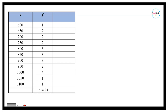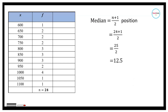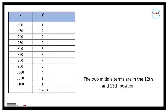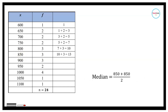Using the position formula: (24 + 1) / 2 = 12.5, so the two middle terms are at the 12th and 13th positions. Counting down the frequencies — 1 + 2 = 3, plus 2 is 5, plus 2 is 7, plus 3 is 10, plus 3 gives us 13 — both the 12th and 13th data entries are equal to 850.